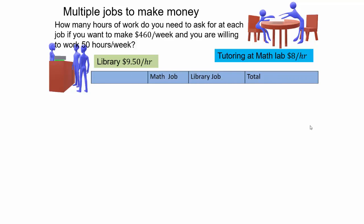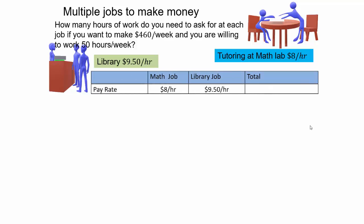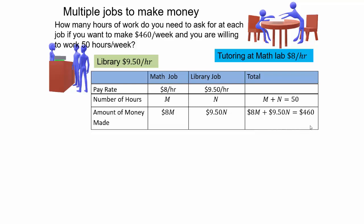Here's my chart. You have a math job and a library job. Your pay rate at the math job is $8.00 an hour and at the library is $9.50 per hour. For the number of hours, we don't know — call it M for math job and N for number of hours at the library. The total hours you're willing to work is 50, so M plus N equals 50. If you work M hours at $8, you earn 8M. Similarly, $9.50 times N for the library.